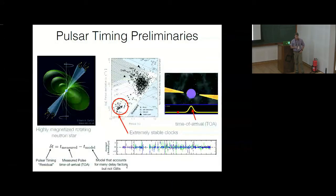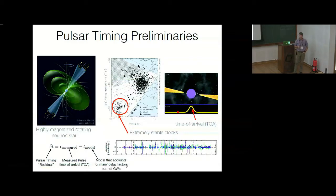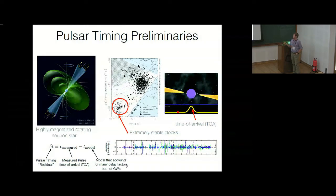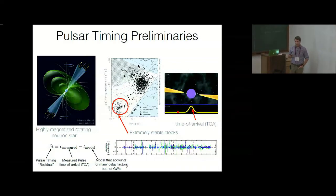Just the most basic preliminaries: pulsars are highly magnetized rotating neutron stars. We use a specific kind of pulsars for gravitational wave detection — millisecond pulsars.